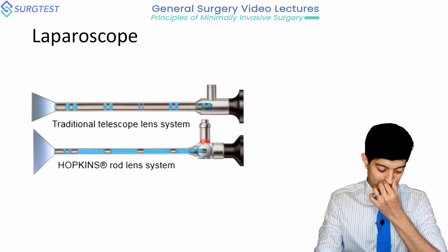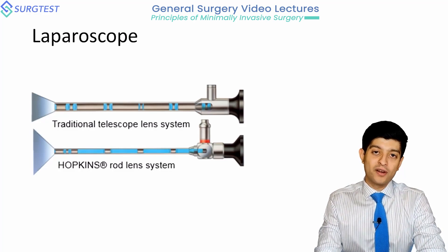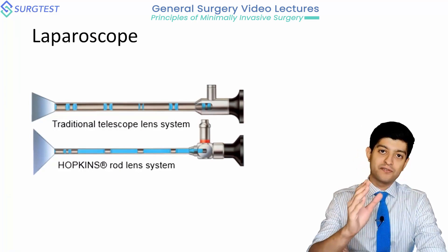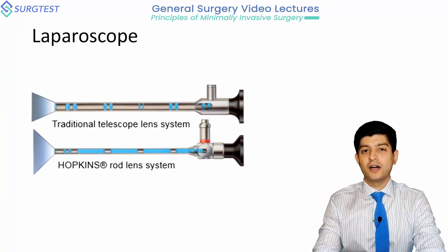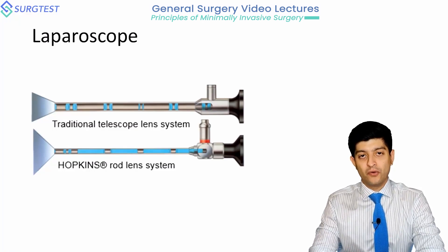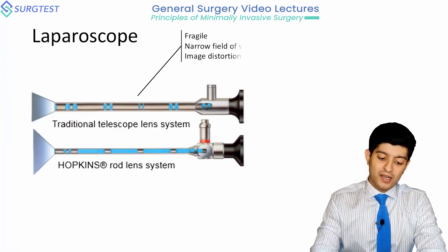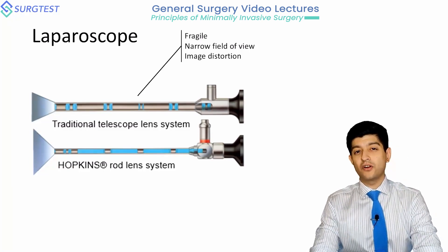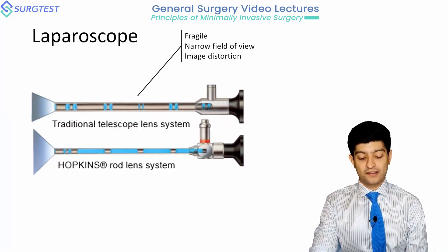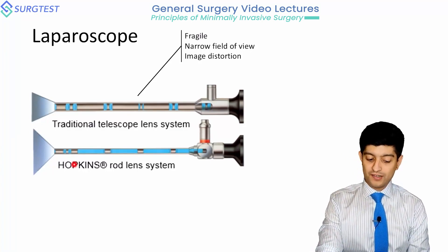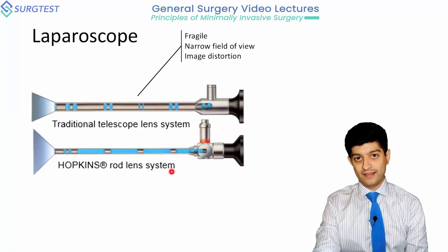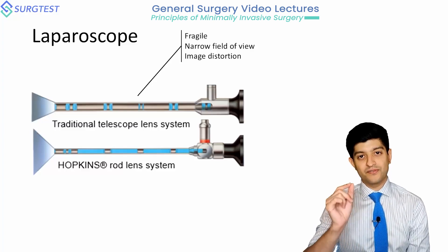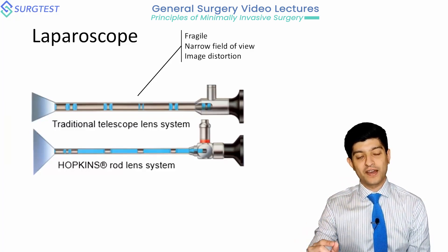Thankfully, we have camera systems now. Traditionally, laparoscopes used a lens system where several thin lenses were spaced with long intervals of air or vacuum within the scope. These were fragile, had a narrow field of view, and caused significant image distortion due to inconsistencies within the thin lenses. The system used now is the Hopkins rod lens arrangement, where long cylindrical lenses are used with very small interspersed areas of air or vacuum.